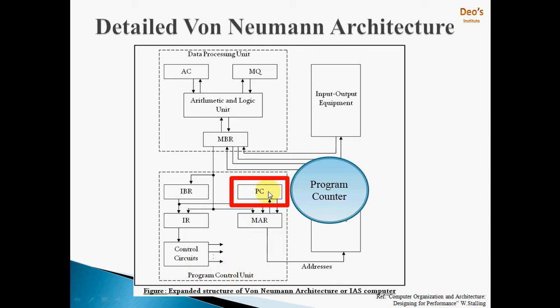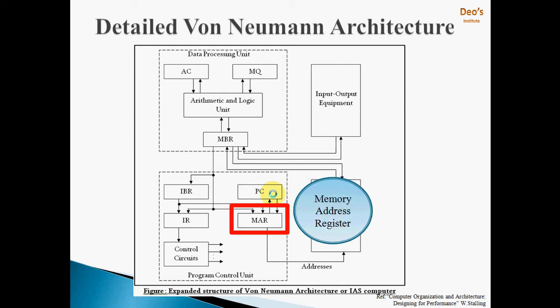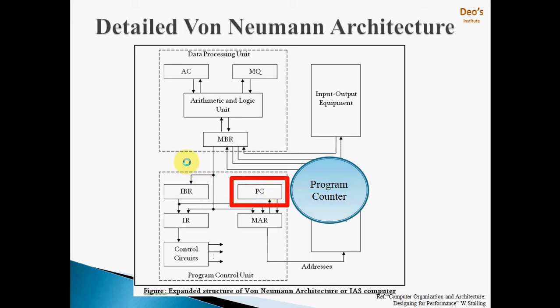The first block in the program control unit is the PC, or program counter. The program counter contains the address of the next instruction to be executed. Every time the processor wants to execute an instruction, the address is taken from the program counter. Instructions are generally executed sequentially, so when one instruction is executed, the program counter is automatically incremented by one so that it points to the next instruction.